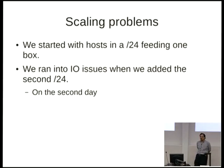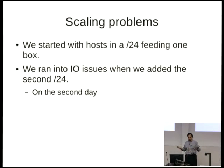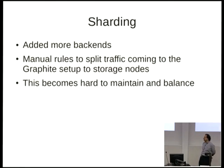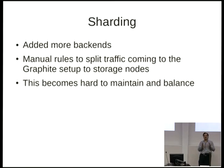One /24 was fine — about 250 boxes on one node. The second box: nope, we had lots of space but it just couldn't keep up. So we added a bunch more backends, still on spinning disk, and wrote manual regular expressions to say 'if traffic comes from this host, send it here.' But then some boxes — like MySQL servers — send out five times as many metrics as the rest of the system combined.